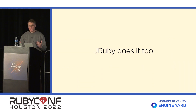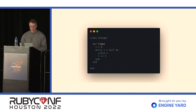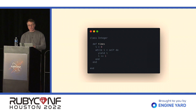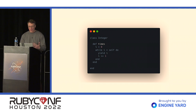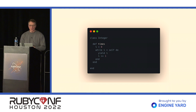JRuby does this technique as well. A great example from JRuby is integer times — a routine you might know about. It uses a while loop and yield to implement the times method, and it's a great simple implementation.